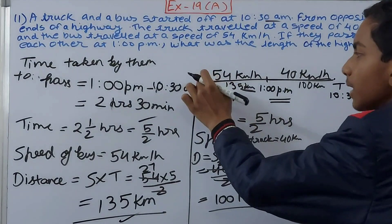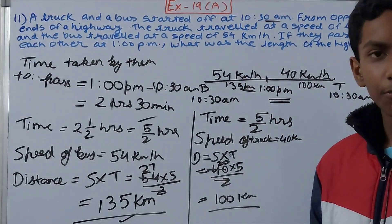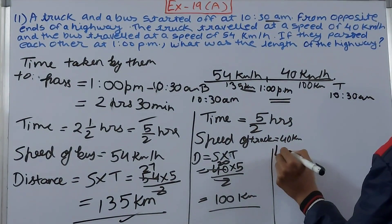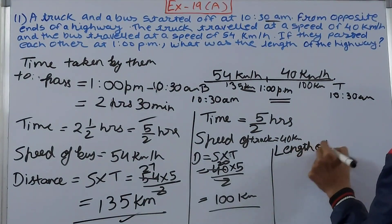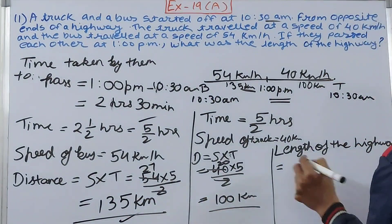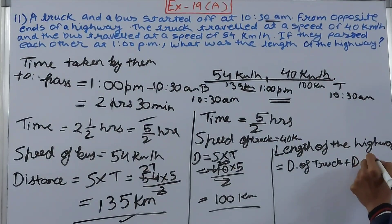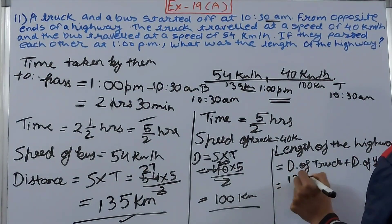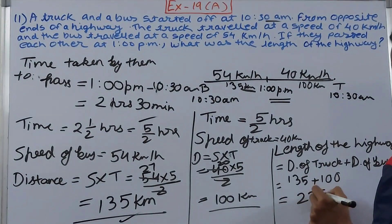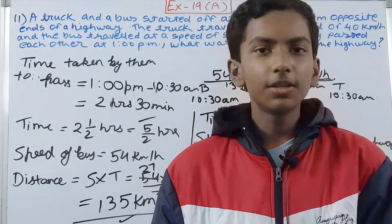Now, if the bus traveled 135 km and the truck traveled 100 km, the total highway length is 135 plus 100. Length of highway = distance of bus + distance of truck = 135 + 100 = 235 kilometers. This is the total length of the highway.